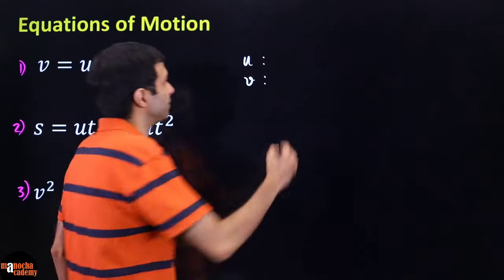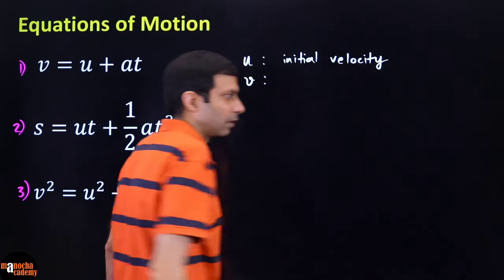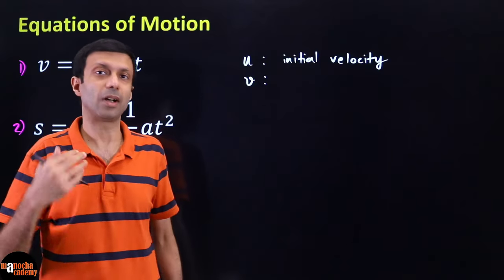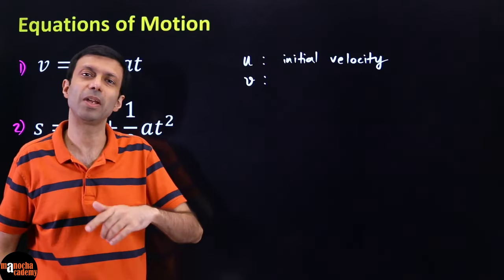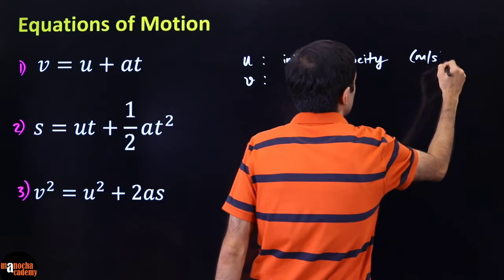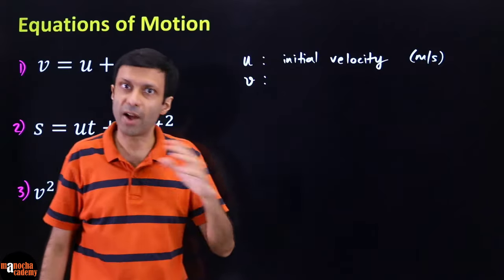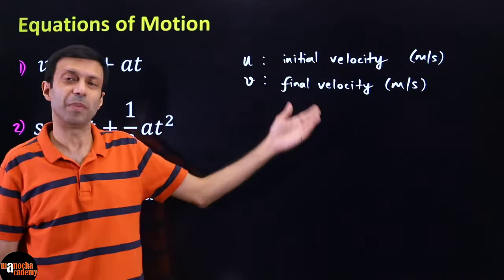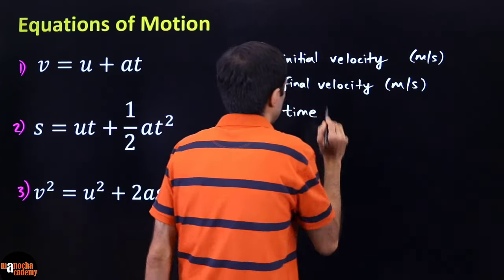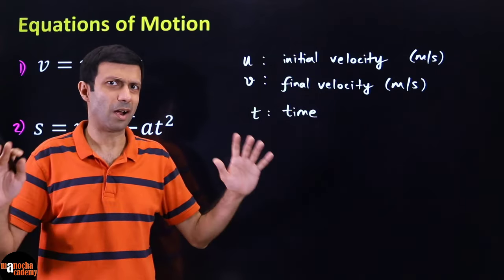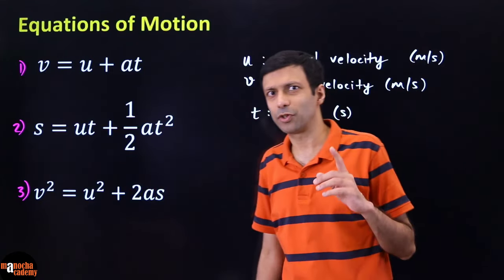U is basically initial velocity and V is final velocity. Initial velocity means the velocity at the start — when you begin your experiment or observation, what is that starting velocity? The SI unit is meters per second. Similarly, final velocity is the last velocity measured at the end of your experiment, also in meters per second. T stands for time, and the SI unit of time is seconds — not hours and minutes.